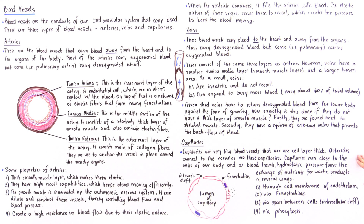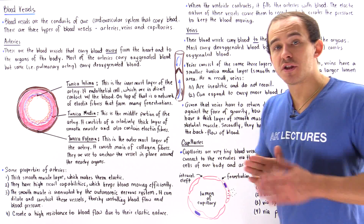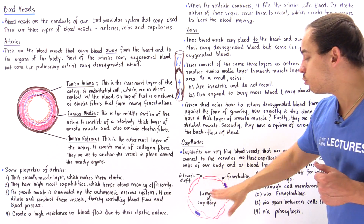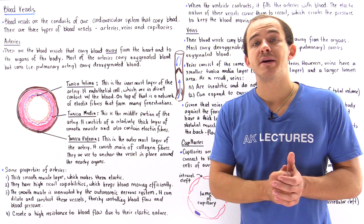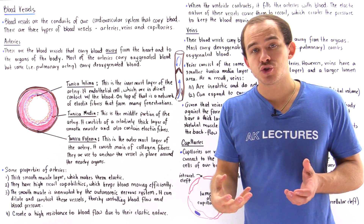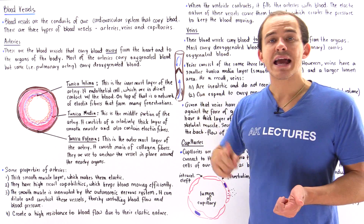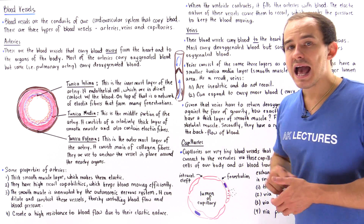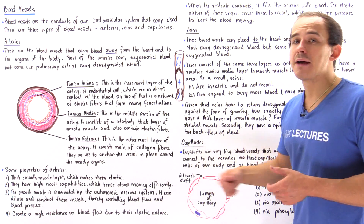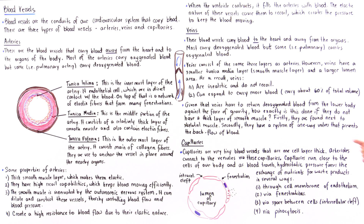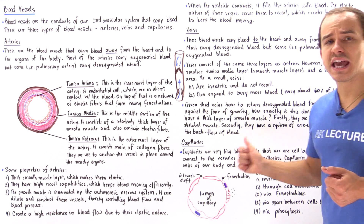Capillaries run close to the cells of our body, and as blood travels through the lumen of the capillary, hydrostatic pressure forces nutrients and waste products to move back and forth between the lumen and the surrounding cells. There are actually four ways by which nutrients and waste products can be exchanged by the capillary.